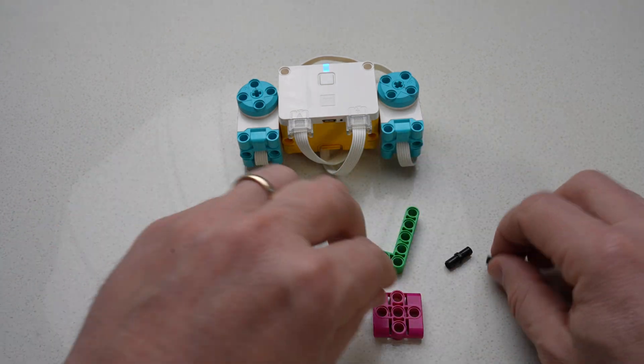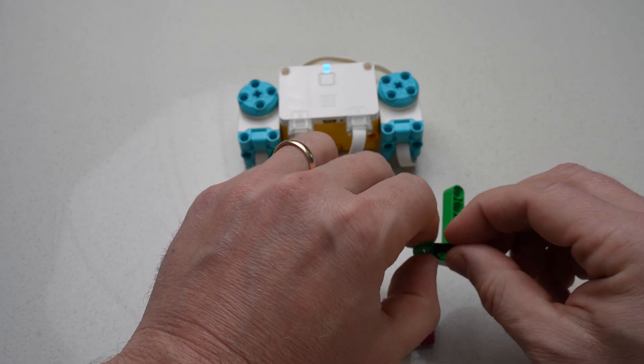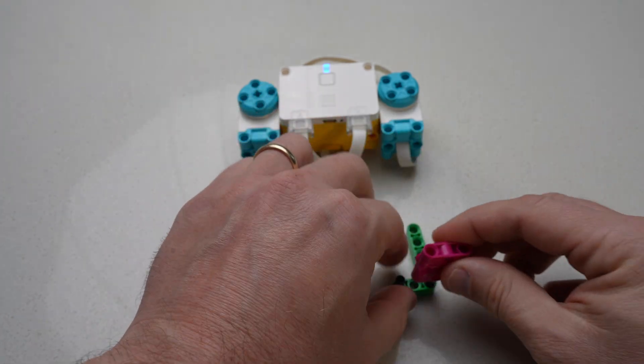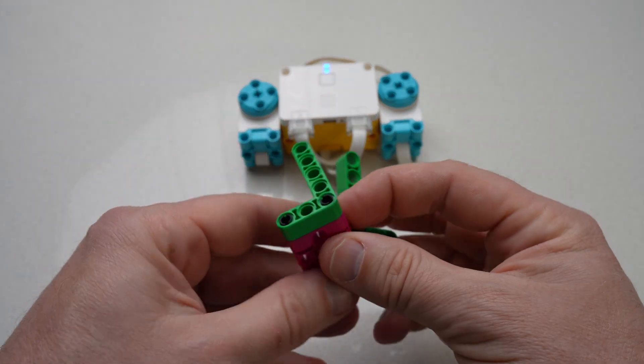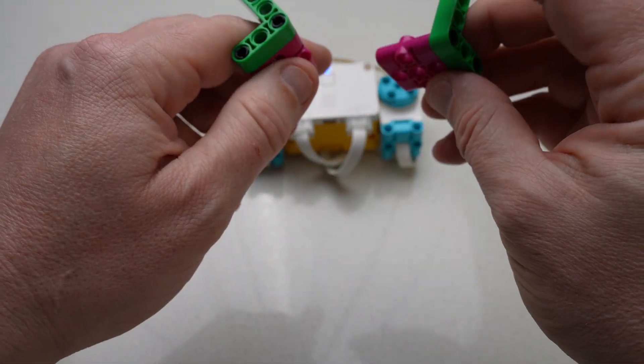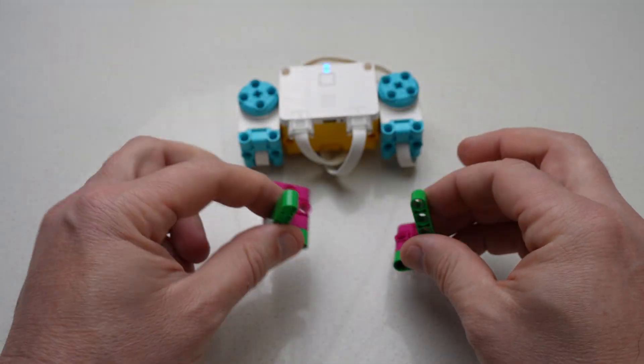Did you know that crabs have ten legs? Now, if you look at a picture of a crab, you'll probably only count eight, and that's because two of those legs are the pinchers or the claws, and those outstanding animal adaptations are what let a crab protect itself.